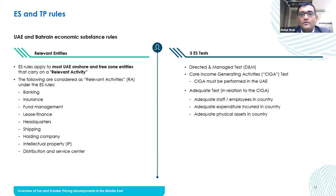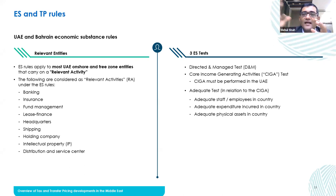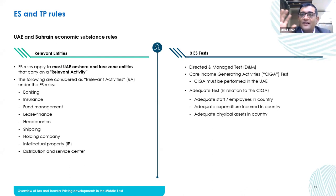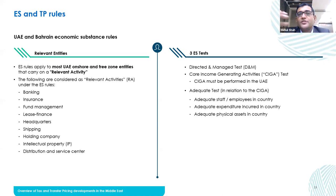The third test is the adequacy test. At times companies are very thinly staffed but the top line is phenomenal — there is no correlation between the number of people and the revenue generation. The authorities ask: whether you have adequate staff or employees in the country, whether you have adequate expenditure being incurred in the country, and whether you have actual physical assets in the country to perform business operations.